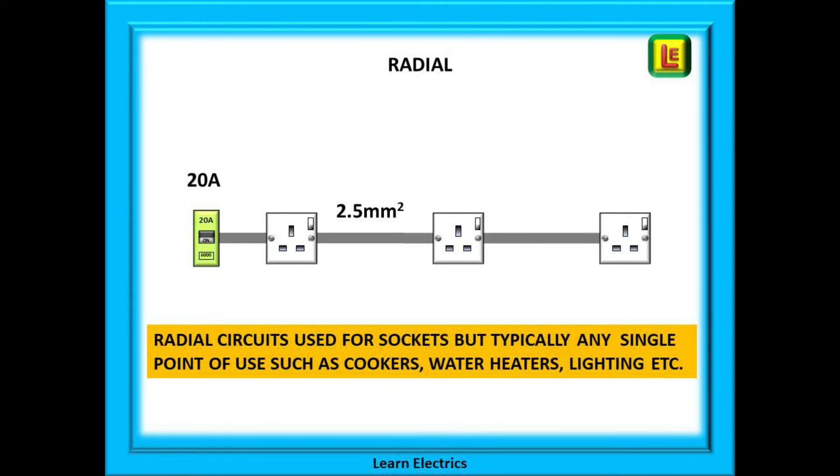Most radial circuits though will supply single points of use such as cookers, water heaters, showers, lighting, electric gates and so on.